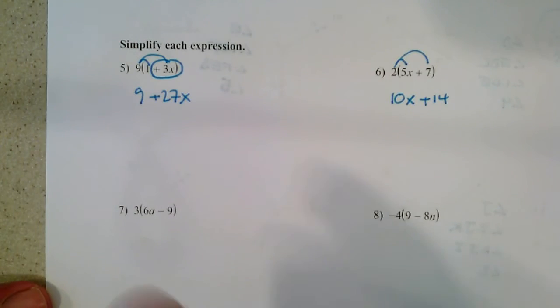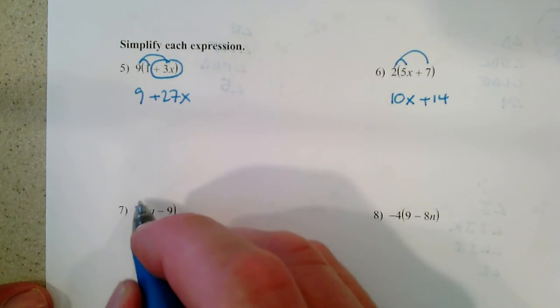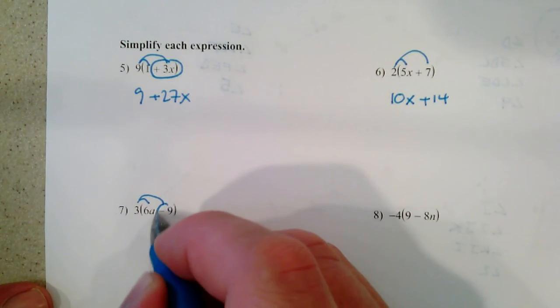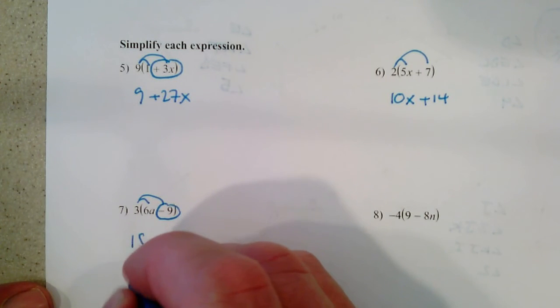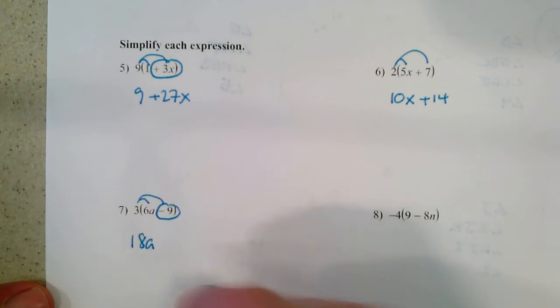Moving down here. We've got 3 times 6a, 3 times a negative 9. 3 times 6a, 3 times 6 is 18a. That means 18 times a. 3 times negative 9 is negative 27.